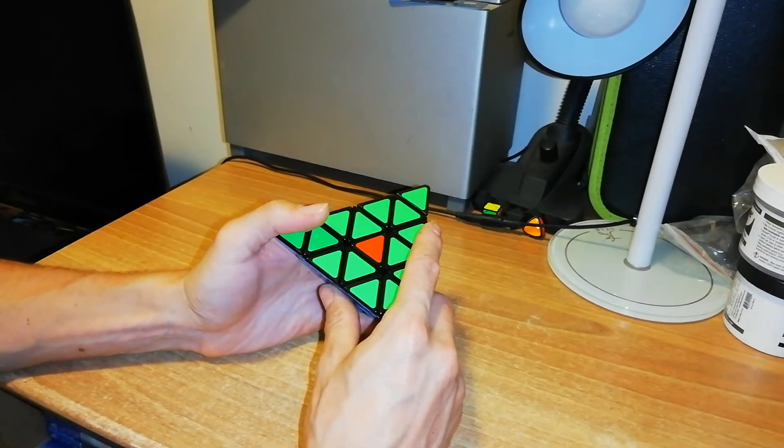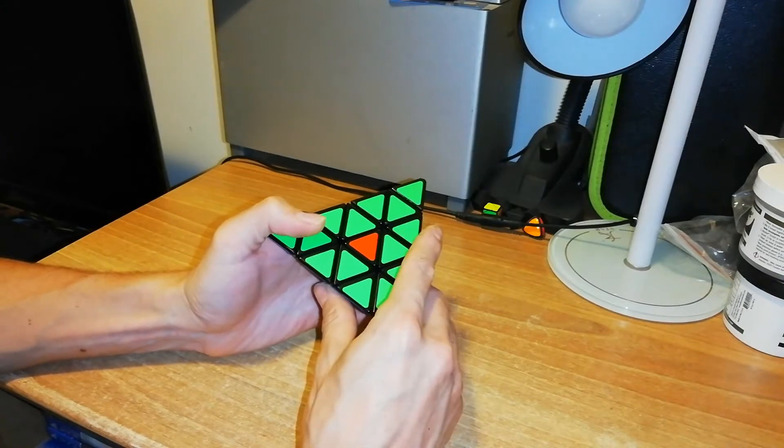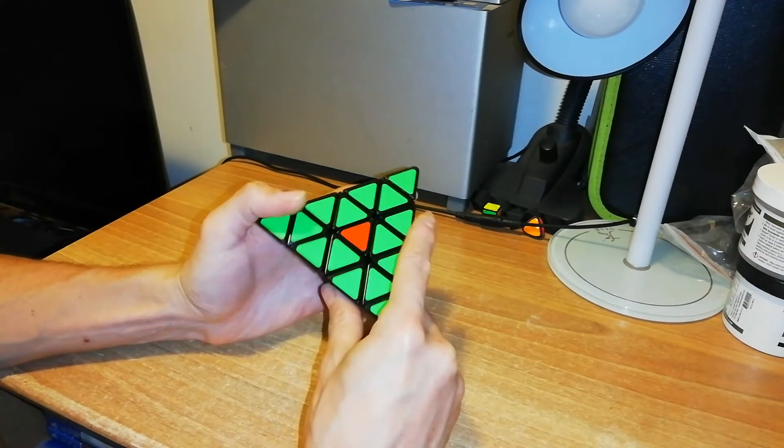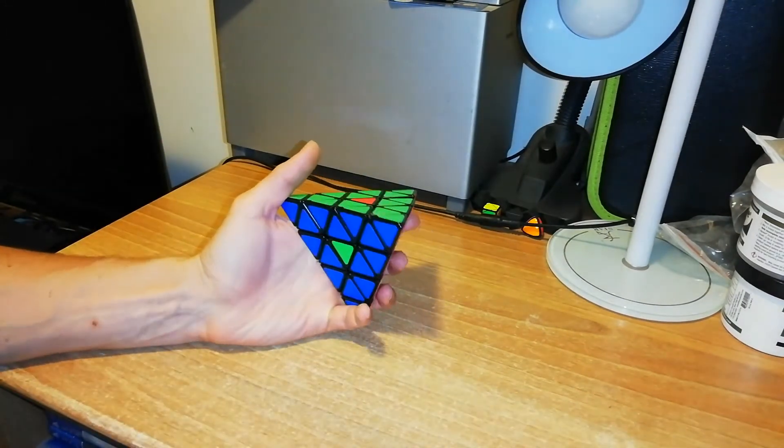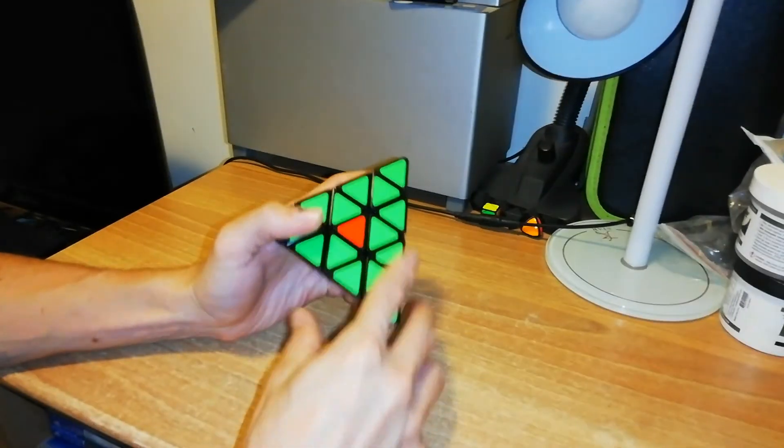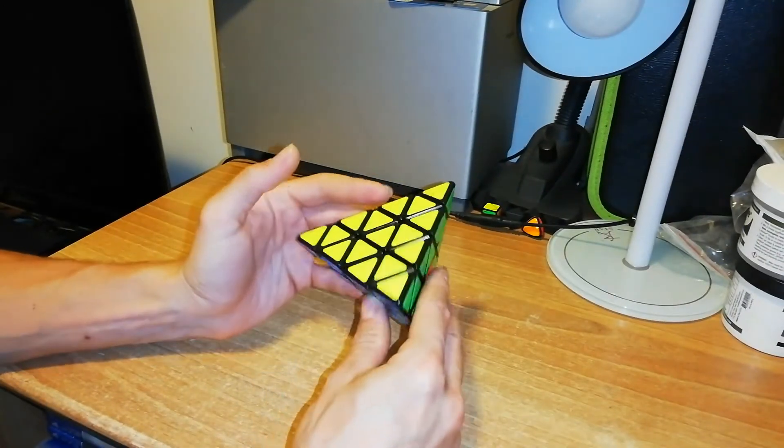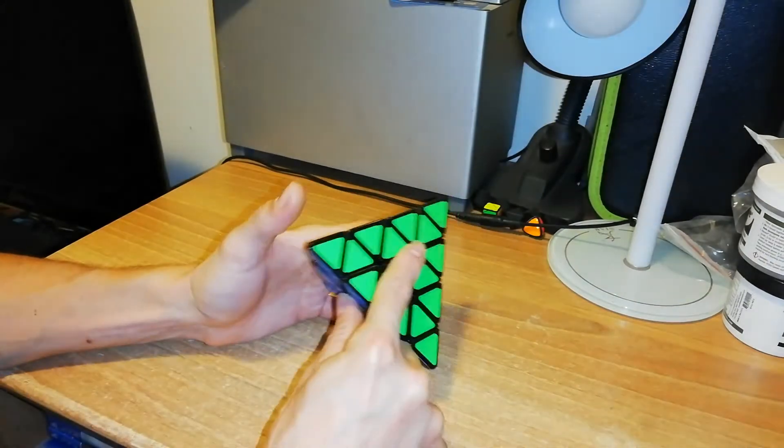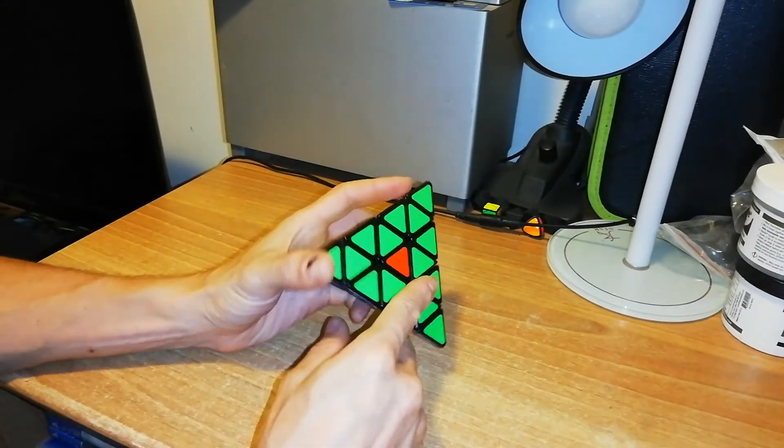This is an even layer version of a Pyraminx, so you can have this kind of parity because the number of pieces is even. For this puzzle, to solve this kind of parity, you have